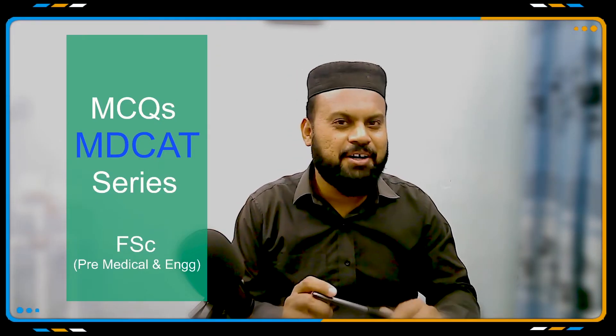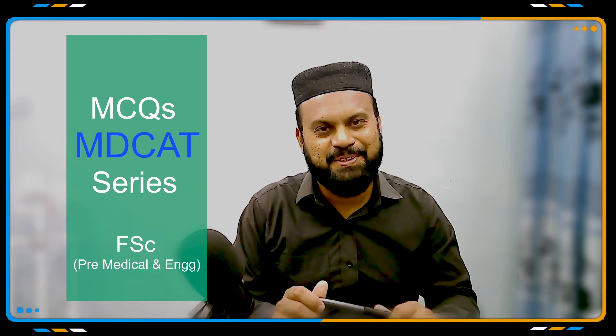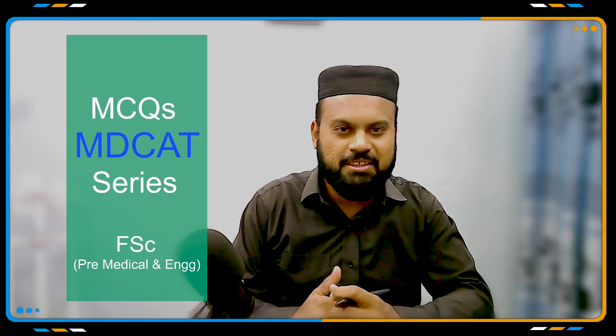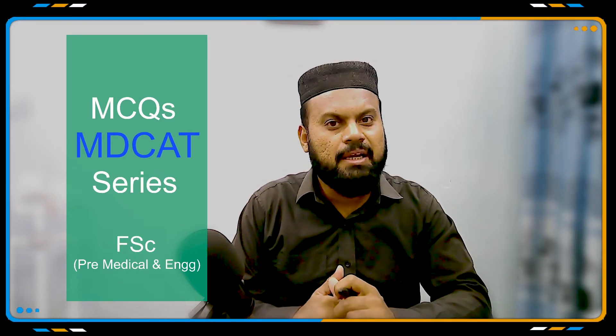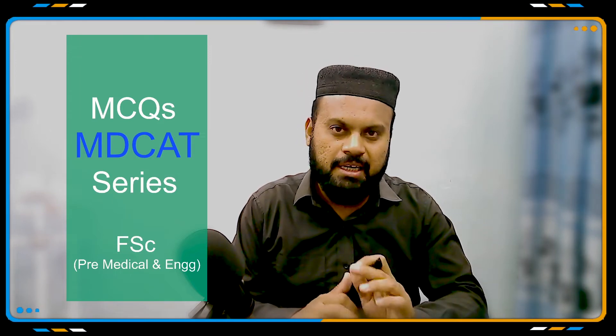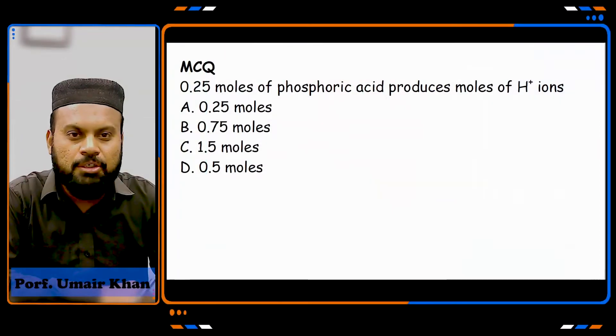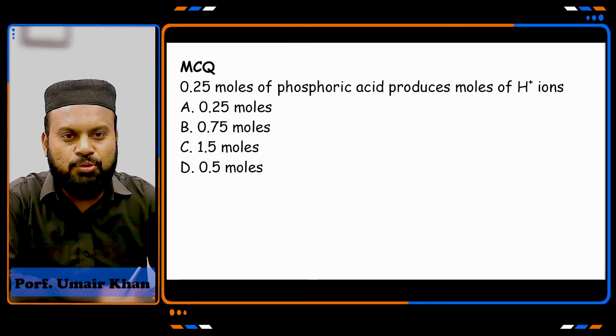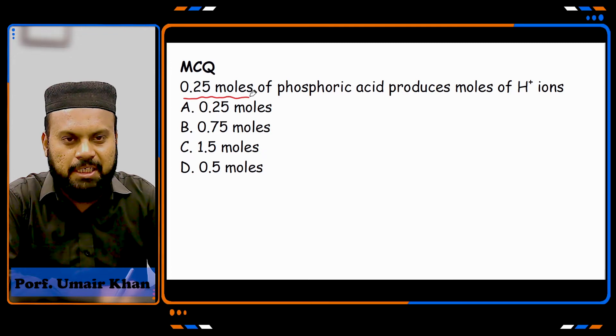Assalamu alaikum dear students, how are you? Today we are learning an MCQ and this is a kind of wild question. We are going to look at what's wrong and how you learn it. The question is: 0.25 moles of phosphoric acid produces moles of H+ ions.